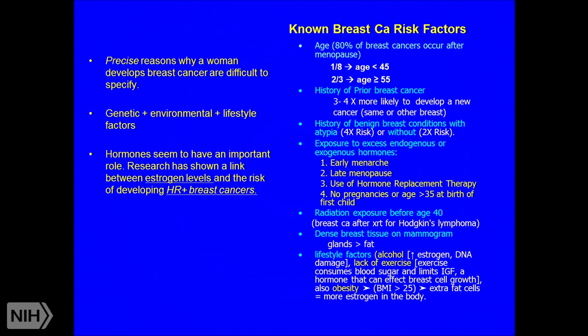If a woman has not had any pregnancies until age 35 or older, that also increases risk. Breast cells don't actually mature until the first pregnancy, so until then they are vulnerable to the effect of hormones. Radiation exposure before age 40 — for example, women who had radiation for Hodgkin's lymphoma in the chest area — has been associated with breast cancer development.